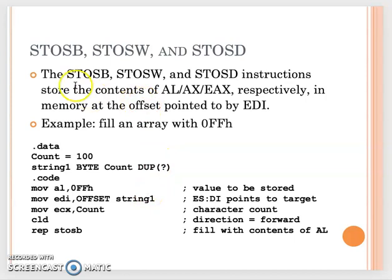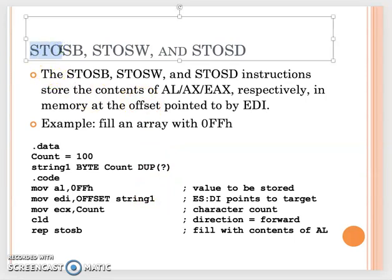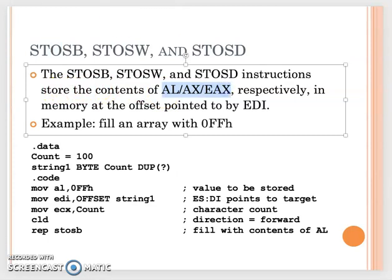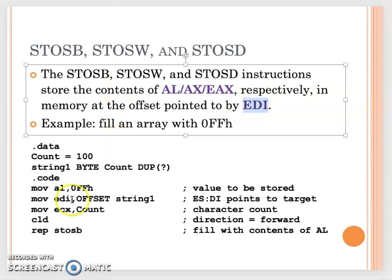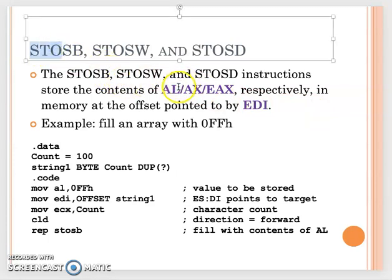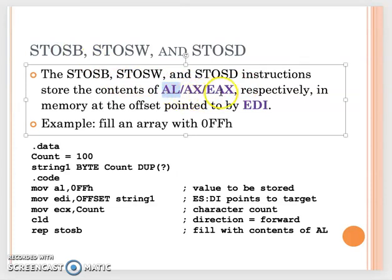Now you know much better, so we'll go a little quicker. The next one is called STORE. STORE means you store the content from AL, AX, or EAX respectively into memory at the offset pointed to by EDI. Remember EDI always points to the destination. So if EDI points to a byte array, you want to copy the AL value to all elements in the array — that's what we mean by store. STORE is from the source value in AL, AX, or EAX; then we copy that value to EDI.